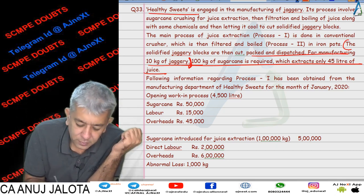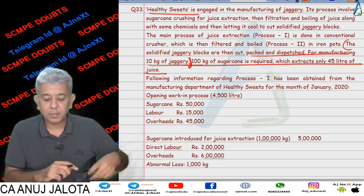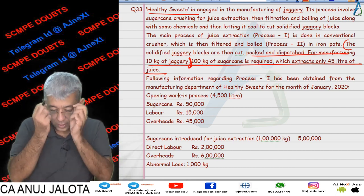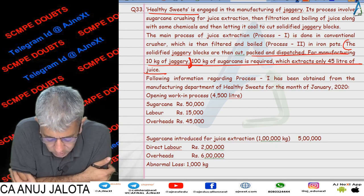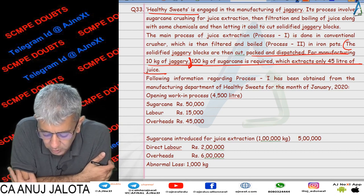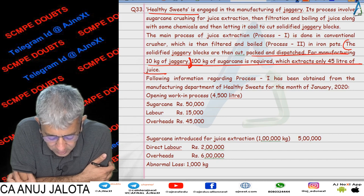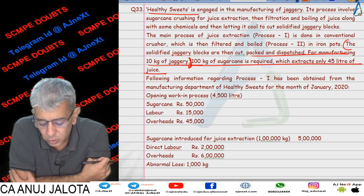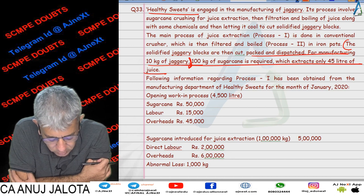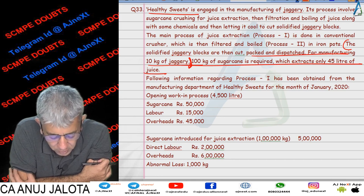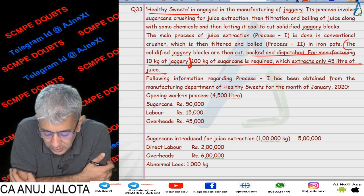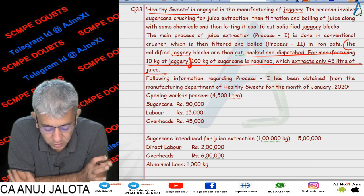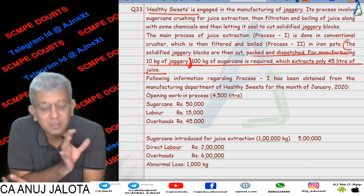Healthy Sweets is engaged in manufacture of jaggery. Its process involves sugarcane crushing for juice extraction, then filtration and boiling of the juice along with some chemicals, and then letting it cool to cut solidified jaggery blocks. The main process of juice extraction — Process 1 — is done in a conventional crusher.